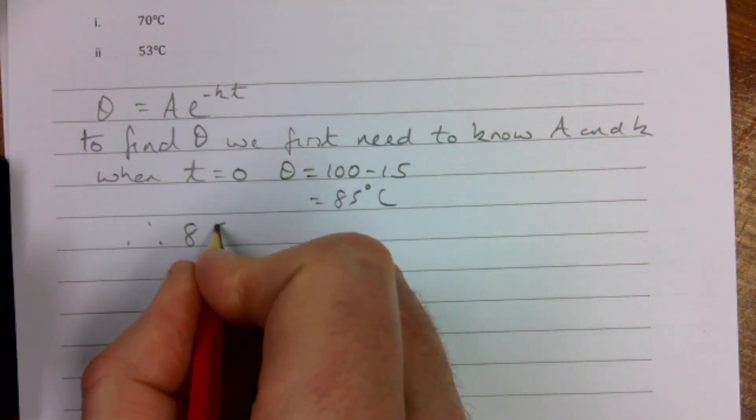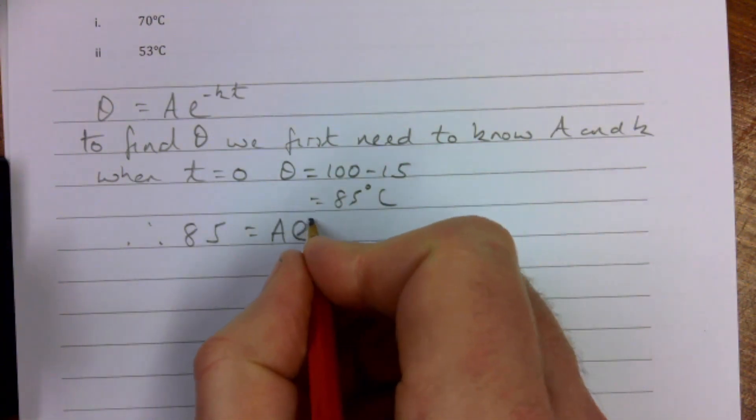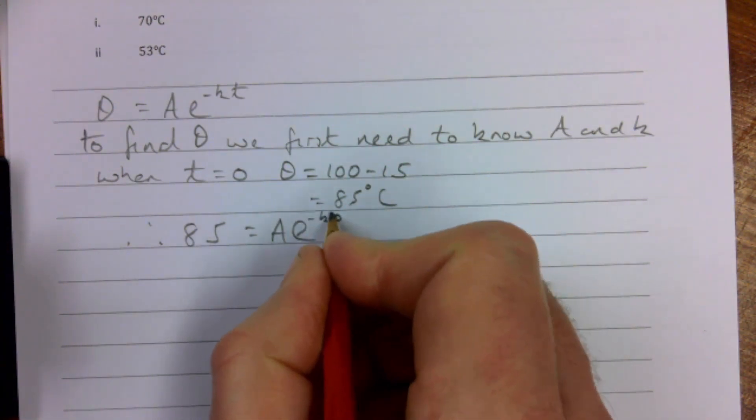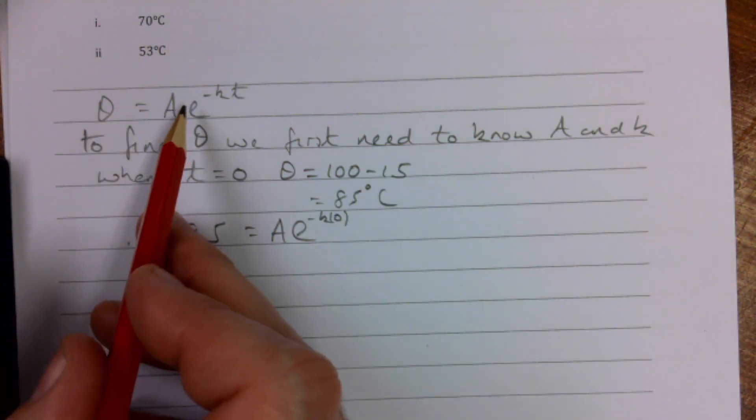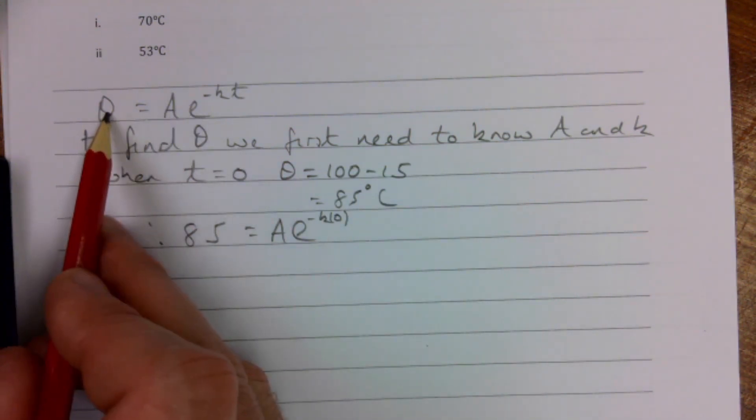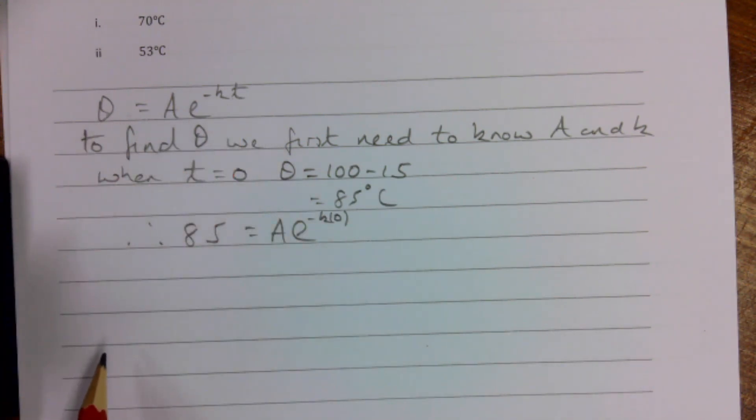Therefore, 85 = Ae^(-k·0). Do you see what I've done? I've taken this equation here and I've substituted in my θ, which is 85, and my t is 0 because at time 0 θ is 85.